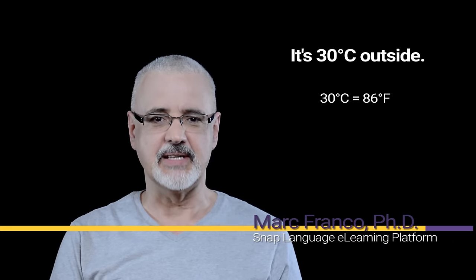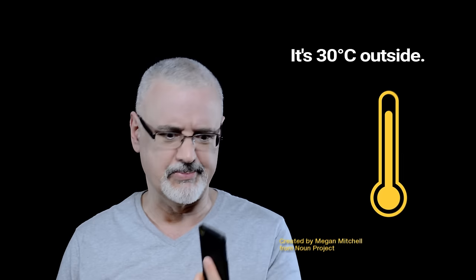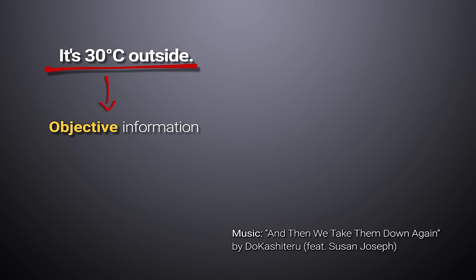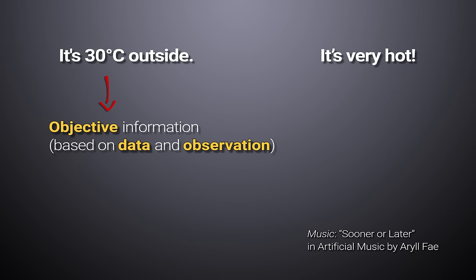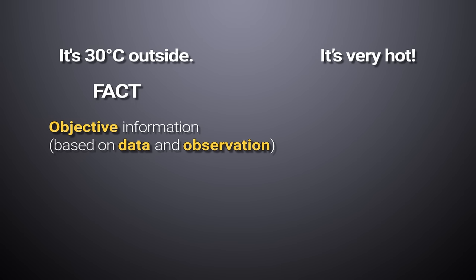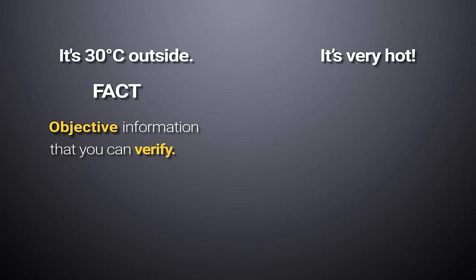Welcome to Snap Language. I'm Mark Franco. If I say it's 30 degrees Celsius outside, you can verify the information. All you need is a thermometer or your smartphone. The information is objective — it's based on data and observation. However, if I say it's very hot, now that's an opinion. 30 degrees Celsius is a fact; it's objective information that I can verify.